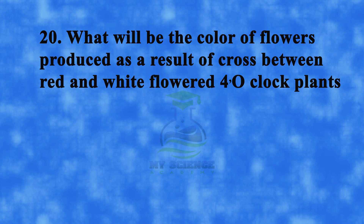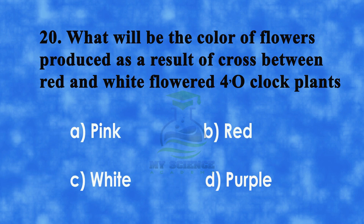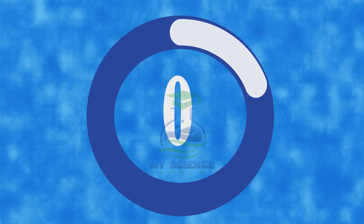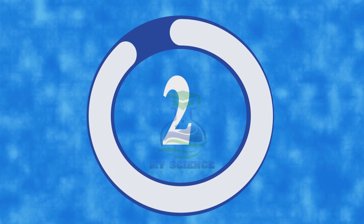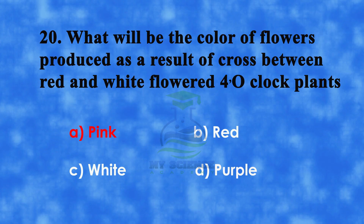Question 20: What will be the color of flowers produced as a result of a cross between red and white four o'clock plants? A. Pink, B. Red, C. White, or D. Purple. Correct answer is A. Pink.